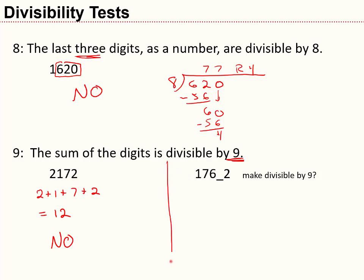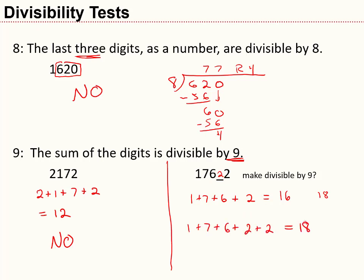Here's an interesting question: suppose I have the number 176_2, with one unknown digit. What digit do I put in to make it divisible by 9? Adding the digits I can see gives 16. The next multiple of 9 after 16 is 18, so I need the missing digit to be 2. The completed number is 17,622, which is divisible by 9.